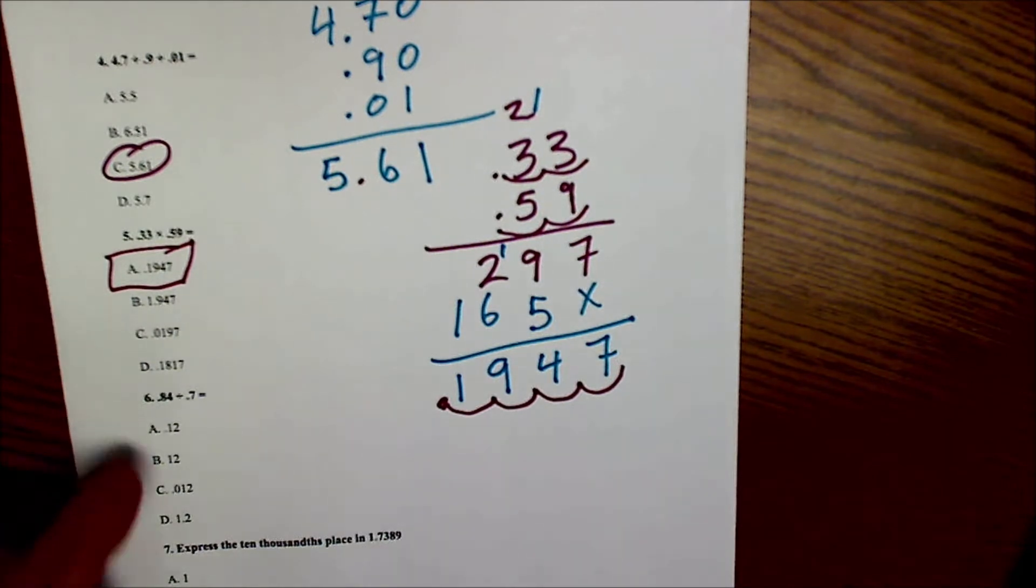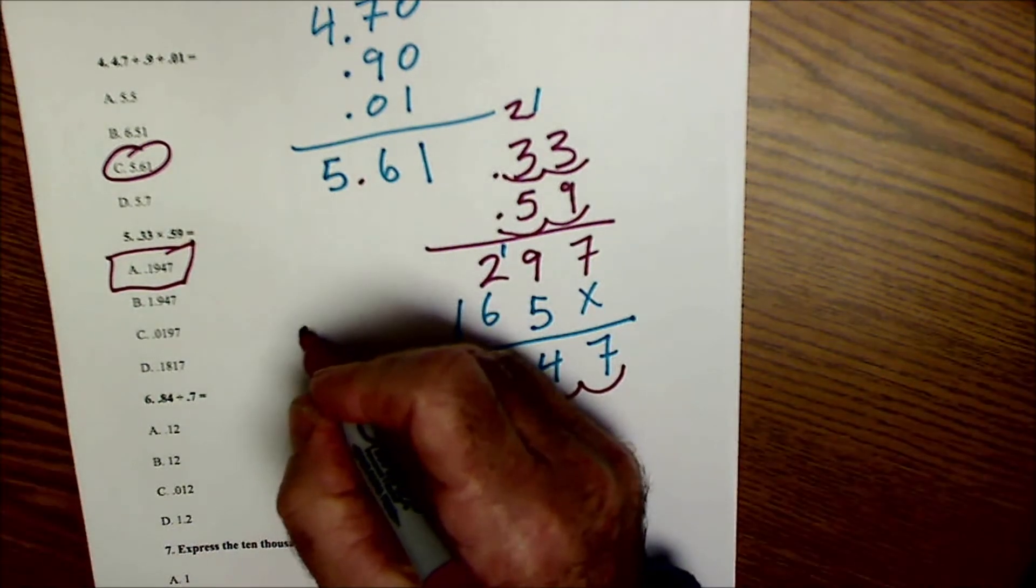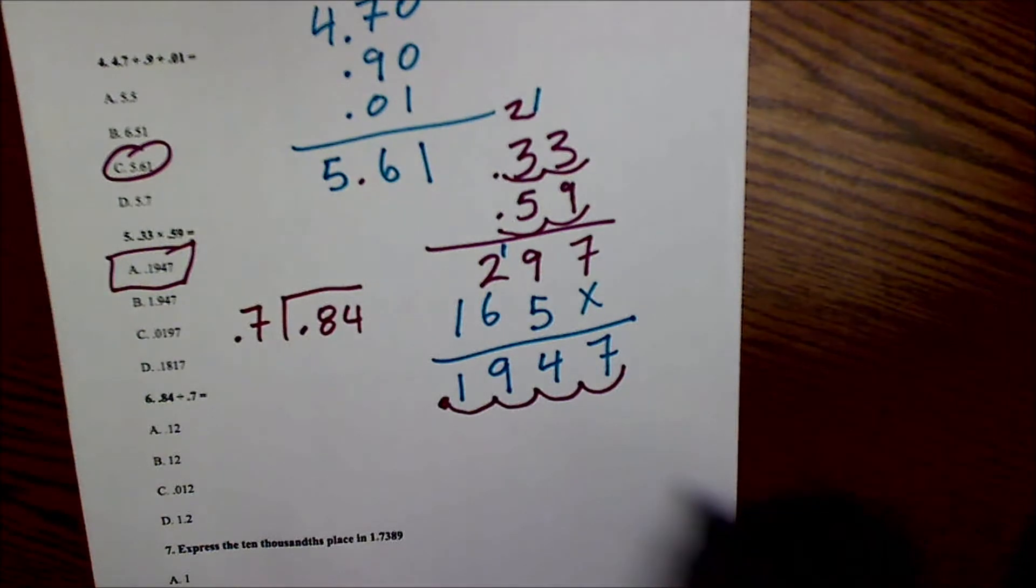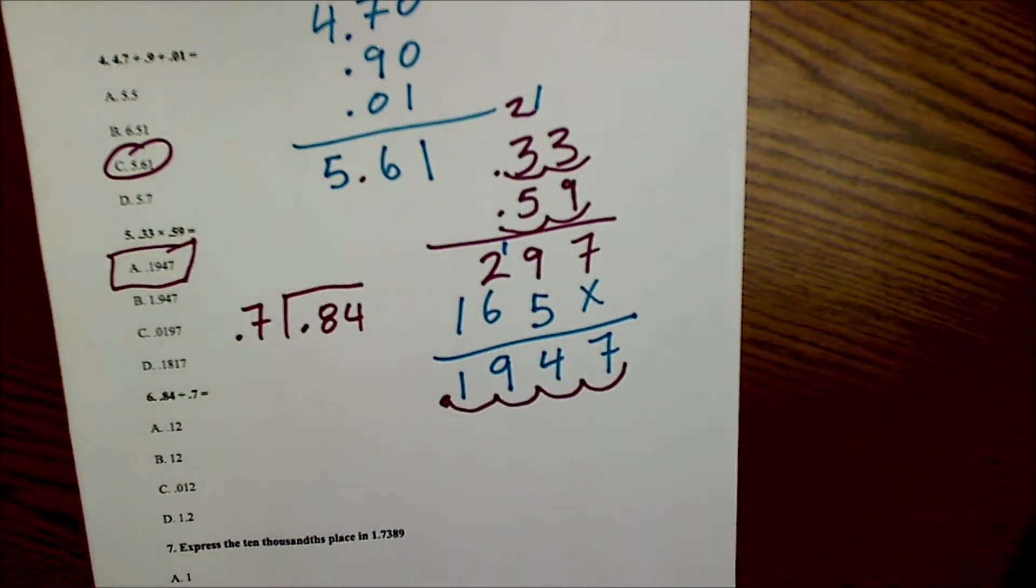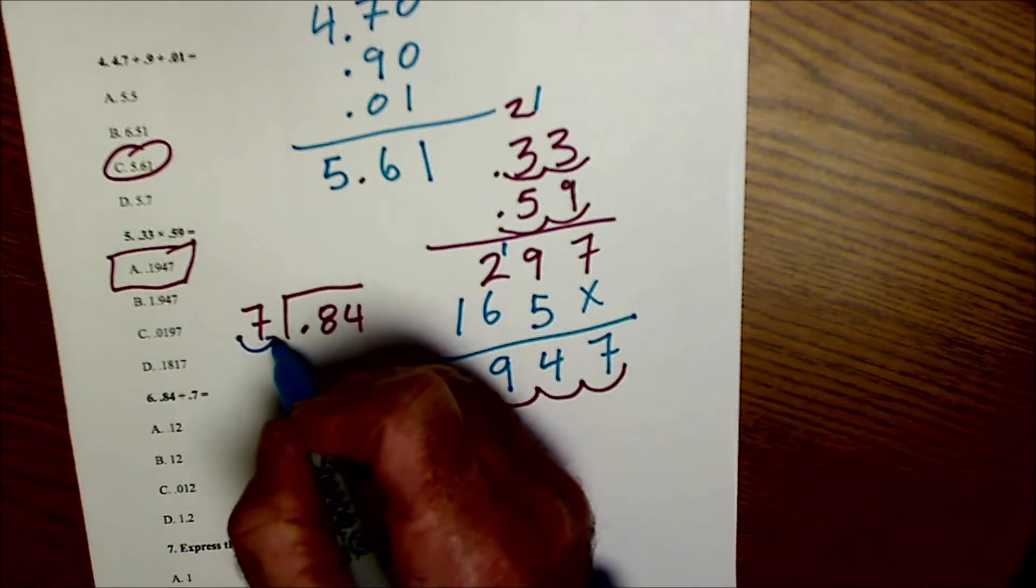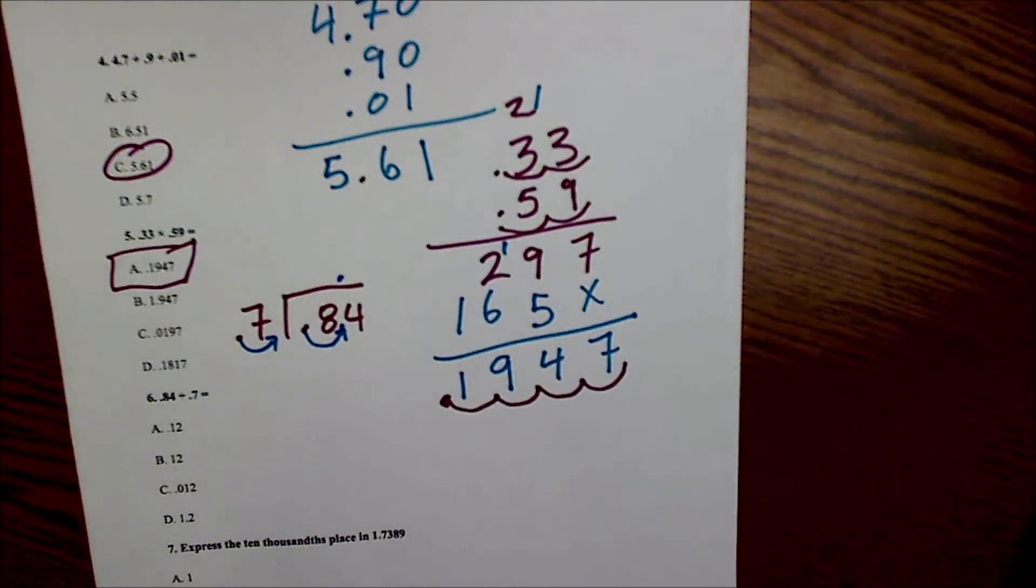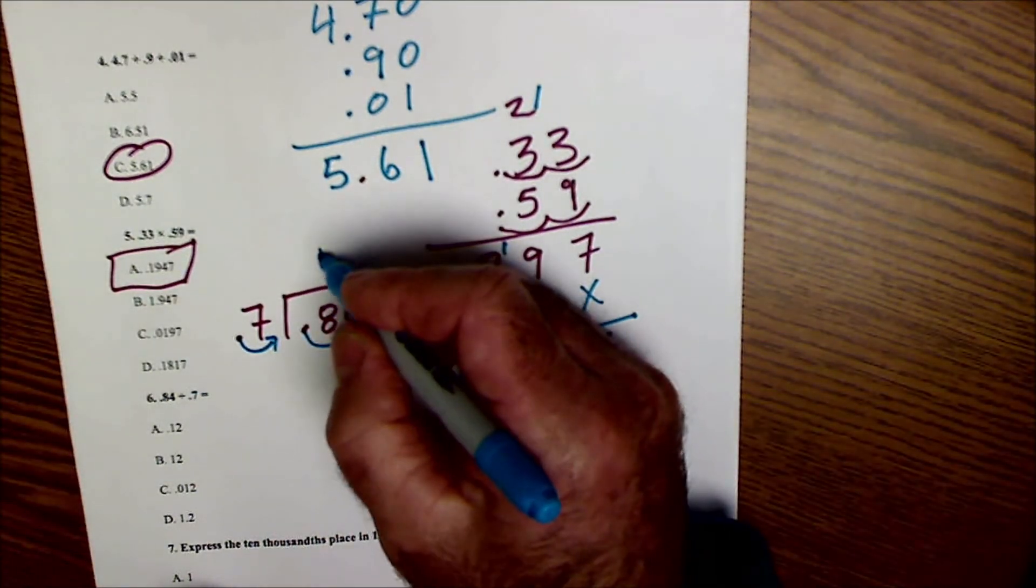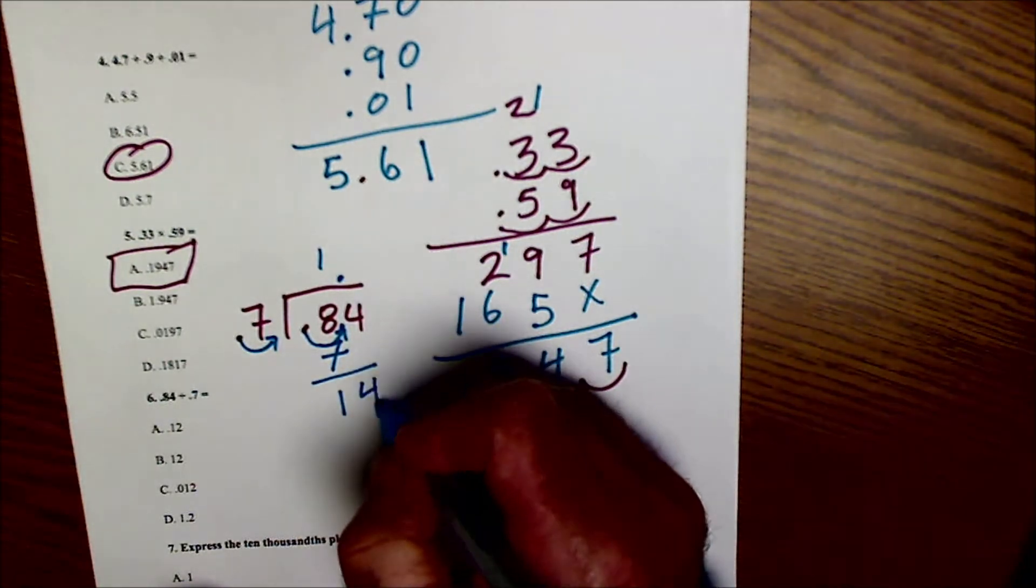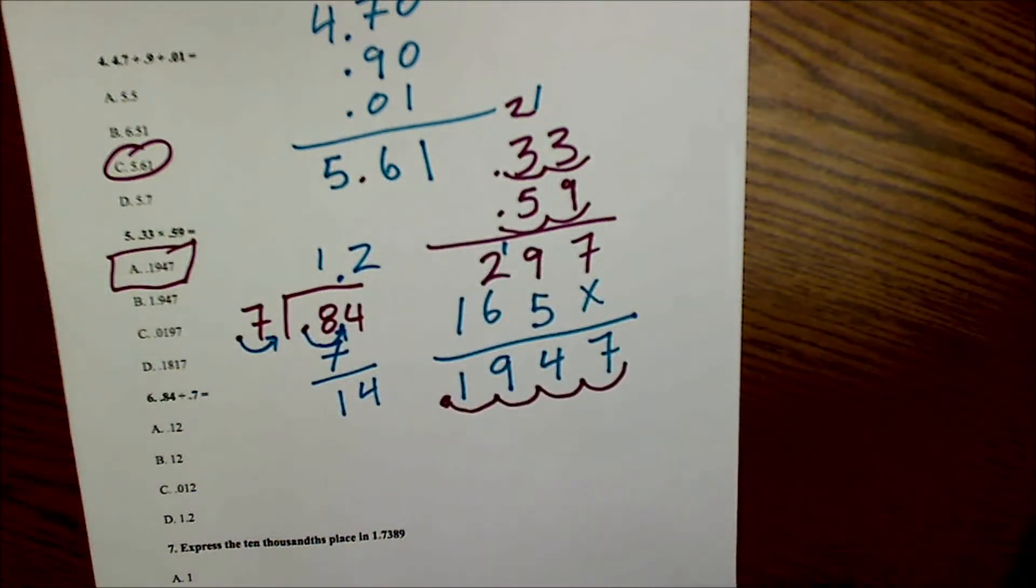Number 6, I'm dividing by decimals. So I have .84 divided by .7. The way I do this is I move this decimal place over till I get an integer here, so I move it over 1, and I do that here. And then once I have the decimal here I move it up. So 7 goes into 8 one time, I write it down below. 8 minus 7 is 1, bring down the 4. 7 goes into 14 two times, and I end with 1.2. I look down here and that's answer D, so 6 is D.